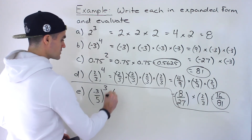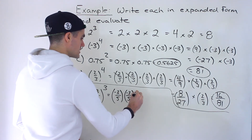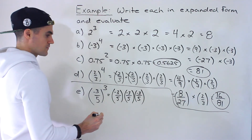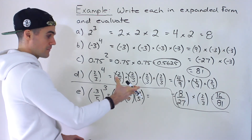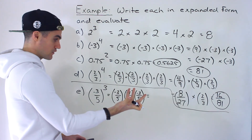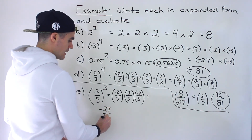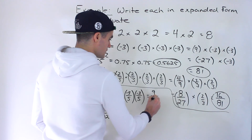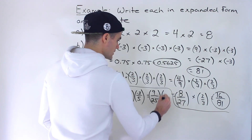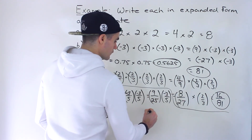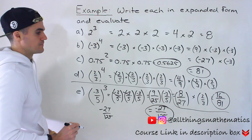Finally, part e: negative 3 over 5 to the power of 3. That's negative 3 over 5 times negative 3 over 5 times negative 3 over 5. You can multiply all of these right away: negative 3 to the power of 3 gives negative 27, and 5 to the power of 3 gives 125, so the final answer is negative 27 over 125. Doing it in steps: negative 3 times negative 3 is positive 9, 5 times 5 is 25, then 9 times negative 3 gives negative 27 and 25 times 5 gives 125 — same answer.